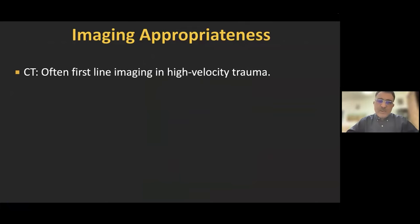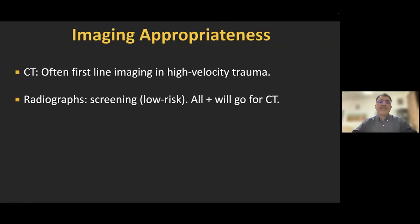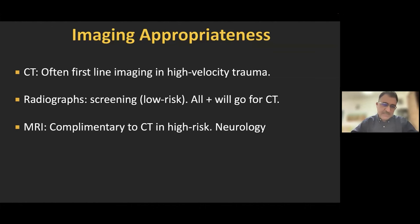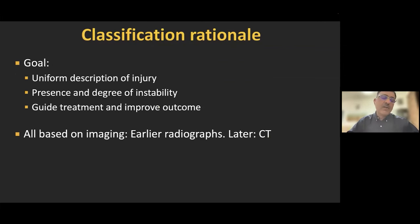Regarding imaging appropriateness, CT is often used as first-line imaging in all high-velocity trauma. Radiographs are used as a screening modality in low-risk patients; however, any abnormality or even suspicious finding on radiographs should prompt CT. Even when radiographs are normal, if clinical suspicion is high for spine trauma, CT should still be performed. MRI is complementary to CT in high-risk patients and is the modality of choice when X-rays are normal or show osteoporotic compression fracture. Any patient with a neurologically positive spine trauma should receive MRI.